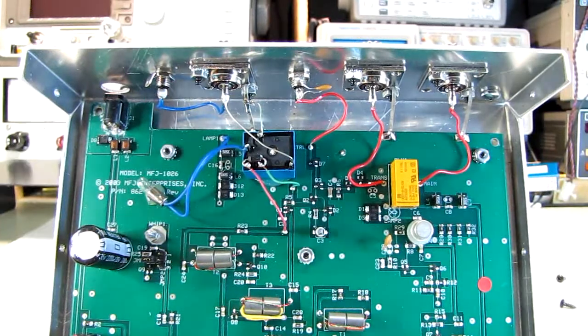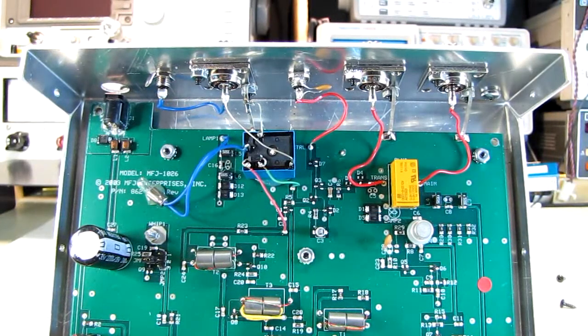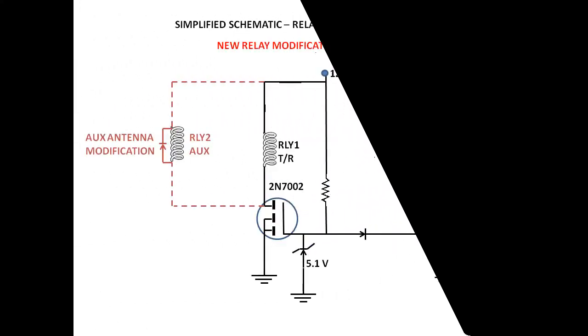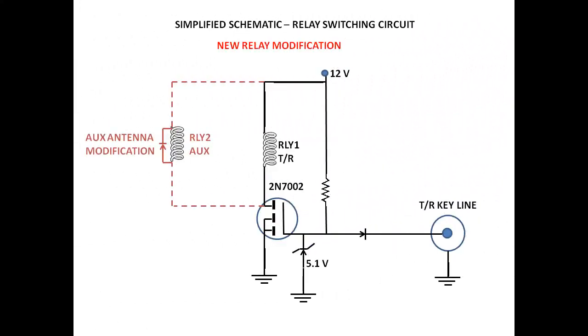Now, as to adding the relay in, take a look at this circuit here for the switching. This partial schematic for the relay switching circuit shows a 2N7002, which is a little SOT23 package, tiny little guy, rated at 300 milliamps at 60 volts. It's an N-channel trench MOSFET.